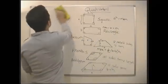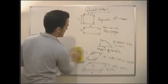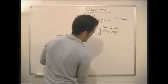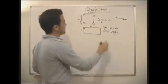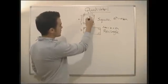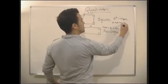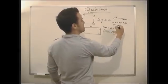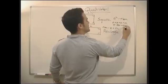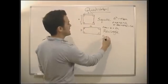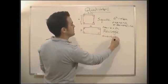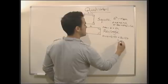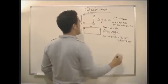We need to make sure we understand what we mean by the term area, the term perimeter, and the term volume. The perimeter of a square would be a + a + a + a — it's the distance all the way round. For a rectangle, it would be a + a + b + b, which equals 2a + 2b. That equals the perimeter.